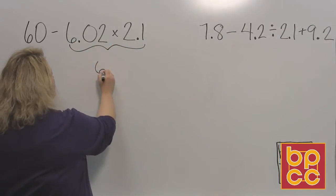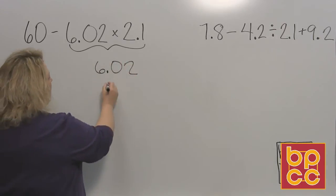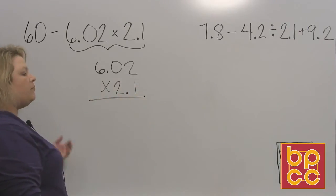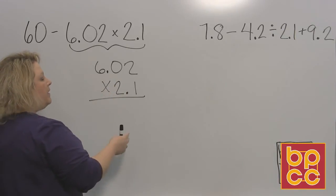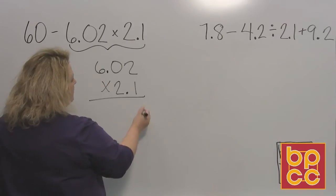So we're going to write six decimal zero two. That's six and two hundredths. And we're going to multiply that by two and one tenth. Okay, so remember one of the previous modules, when you do your multiplication of decimals, all you do is multiply like a normal problem. And then when you're done, that's when you worry about where your decimal goes.